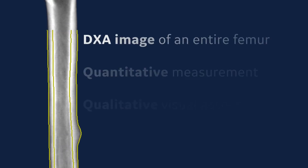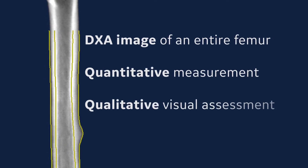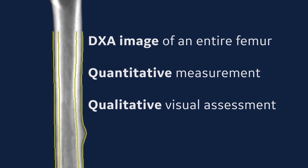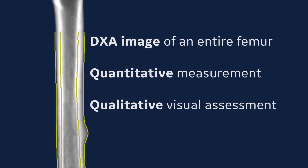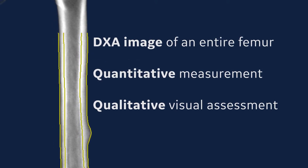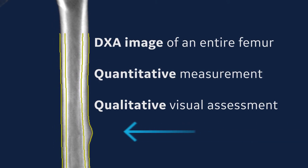This feature provides a DEXA image of an entire femur for both quantitative measurement and qualitative visual assessment to identify areas of focal thickening along the lateral cortex of the femoral shaft.